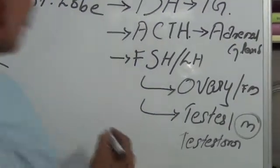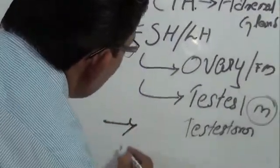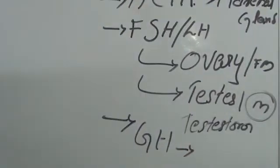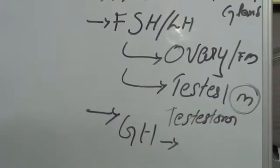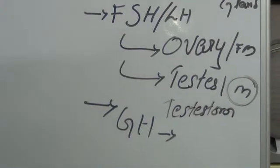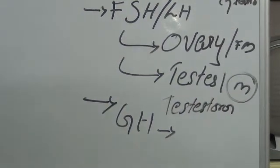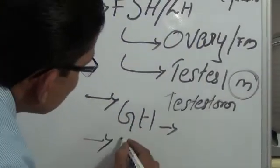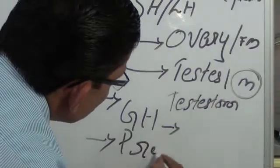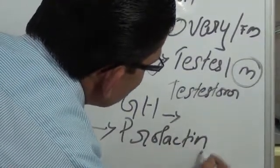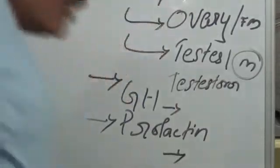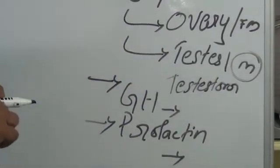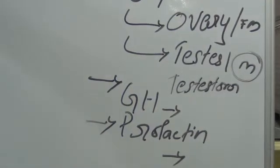Likewise, other hormone is growth hormone. Growth hormone stimulates or promotes the general growth of each and every cell or the overall system. Next hormone is the prolactin which basically helps the secretion of milk in lactating women and helps in labor.